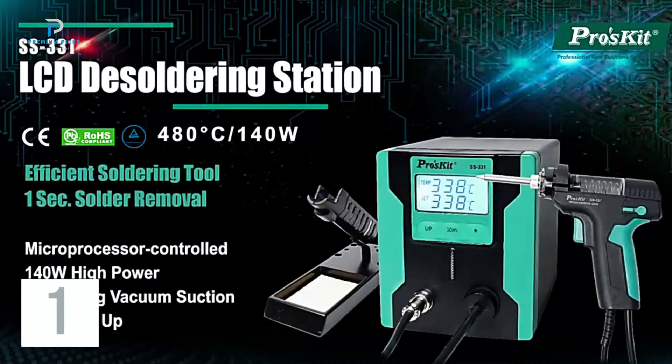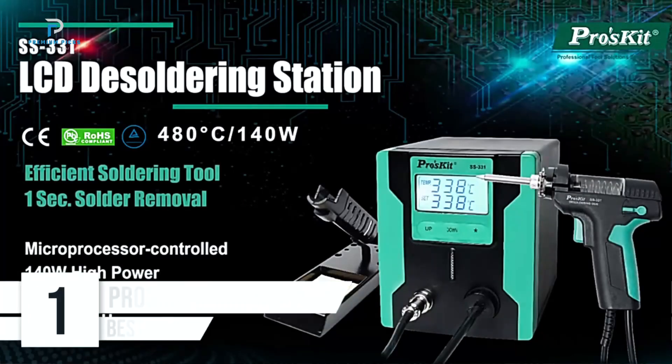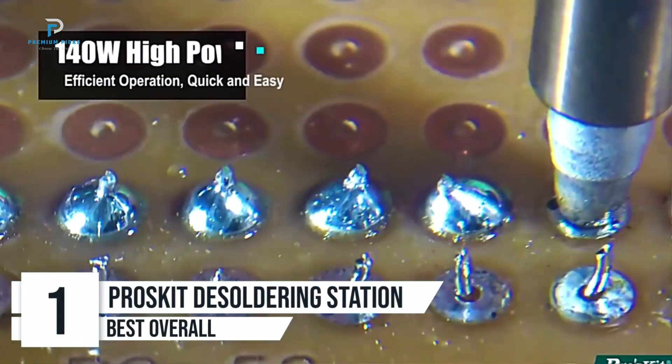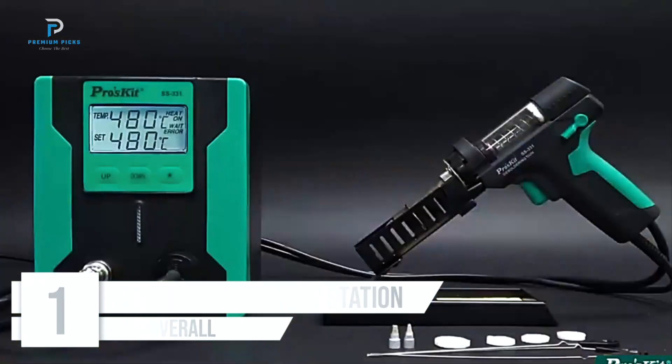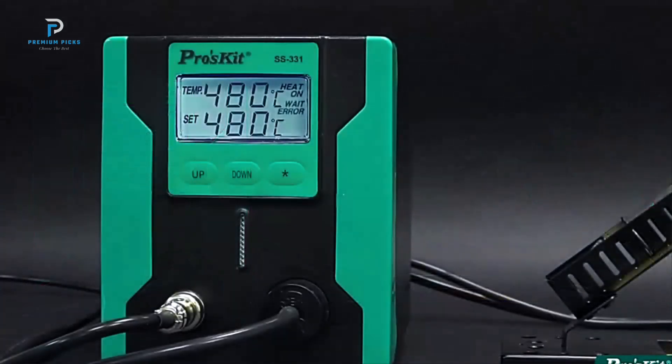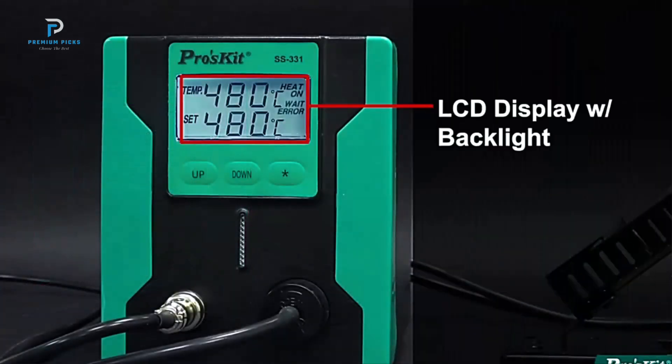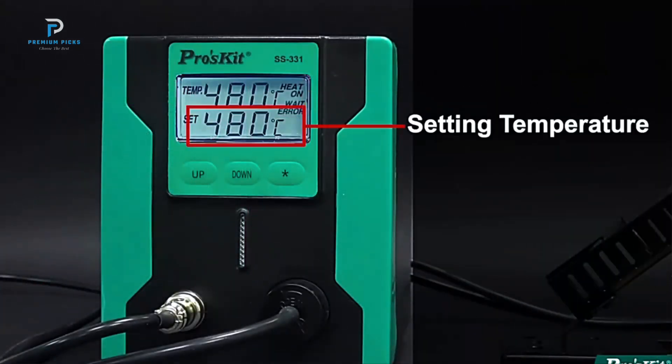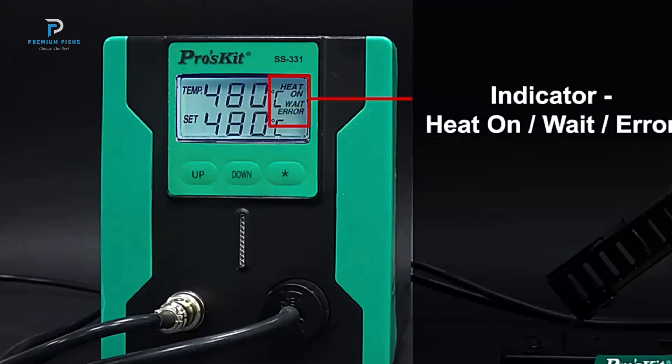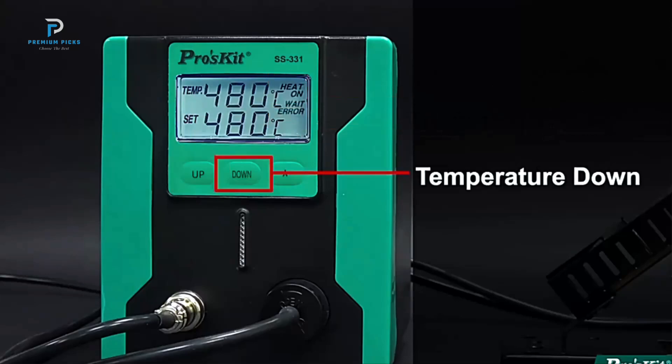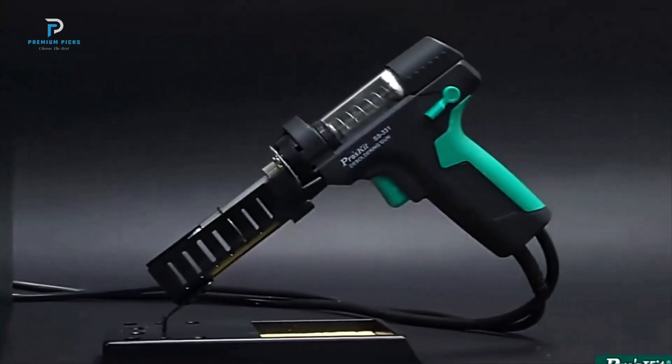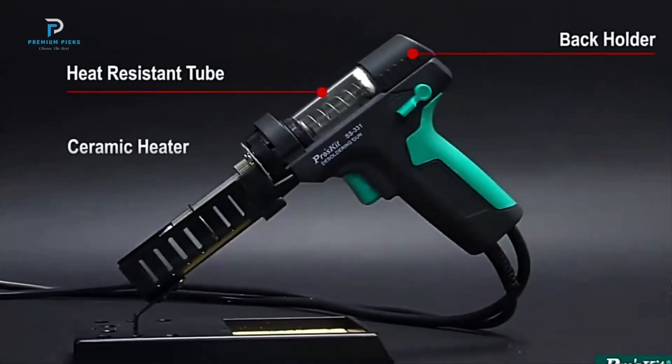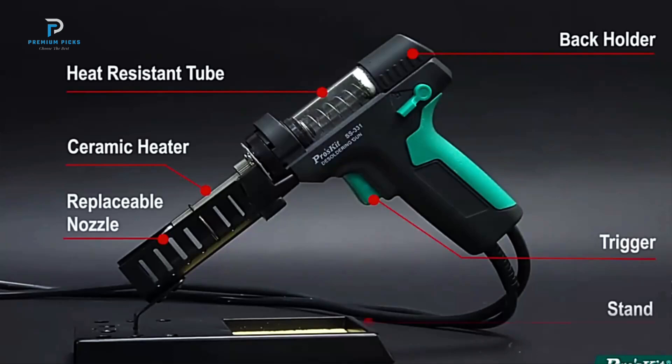Number 1. ProsKit SS331H Electric Desoldering Station. For anyone handling regular soldering and desoldering tasks, the ProsKit SS331H Electric Desoldering Station offers a compact, powerful, and user-friendly solution. Combining high suction power with a robust ceramic heating element and advanced digital controls, this desoldering station is a valuable addition to any tool kit, whether for professional electronics repair or hobbyist use.